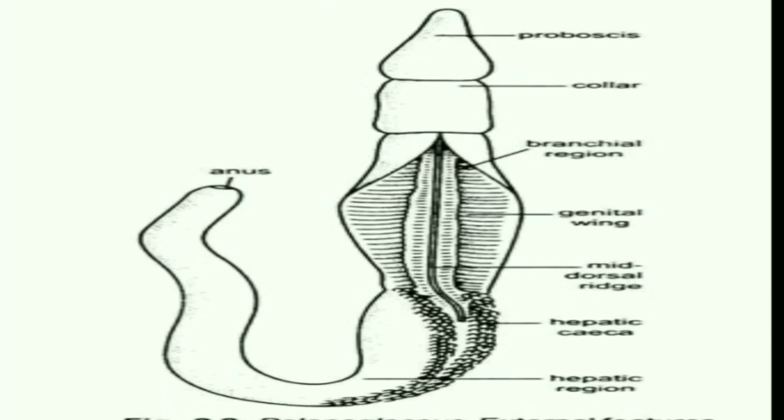The collar is the short middle part that overlaps the proboscis stalk — it surrounds the proboscis stalk or neck. The collar also carries a coelom called collar coelom, which opens to the outside by collar pores present at the posterior end of the collar into the first pair of gill pouches. The collar contains a wide mouth just below the proboscis stalk, which remains open most of the time.